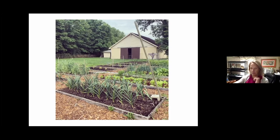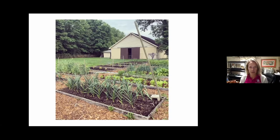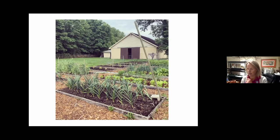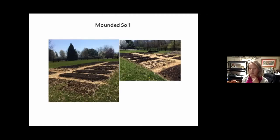In our garden we have landscape fabric in the rows to help keep weeds from coming up, and also wood chips. We called a local tree company — since they have to pay to dispose of wood chips at the landfill, we told them to drop chips off at our house if they're in the area. We came home to a giant pile of wood chips, which we used in the rows and other places. We started out with just mounded beds, which is also a really good option, and then slowly moved into raised beds.